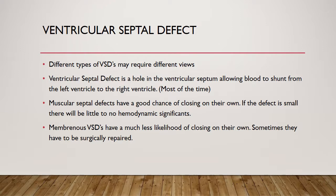The ventricular septal defect is a hole in the ventricular septum allowing blood to shunt from the left ventricle to the right ventricle most of the time. Occasionally you'll see it go the opposite way if the right side is very enlarged or if the child has pulmonary hypertension.